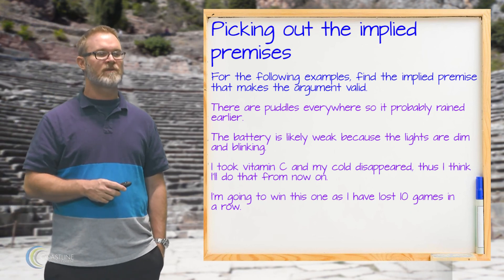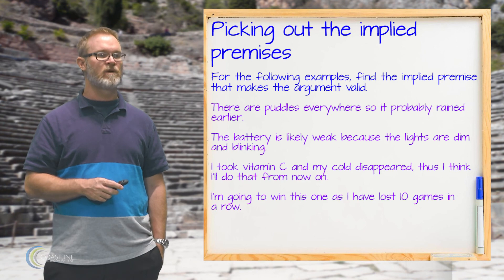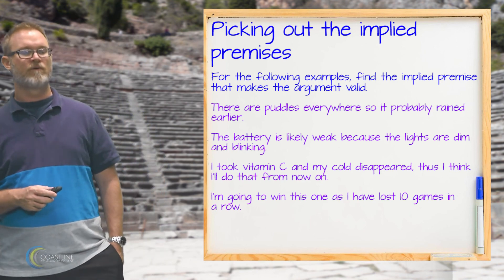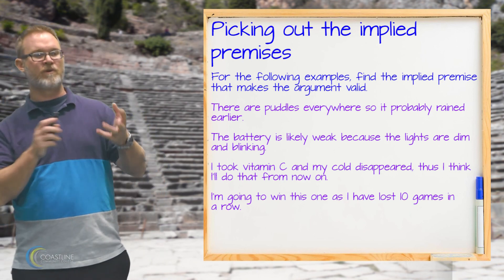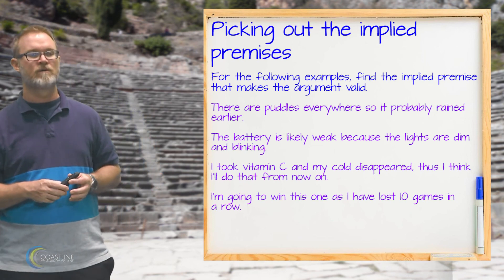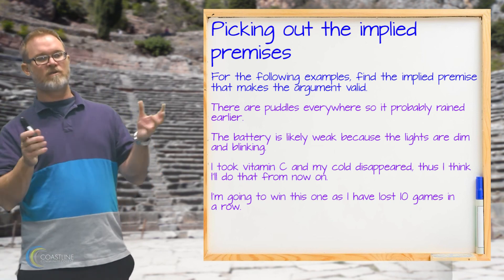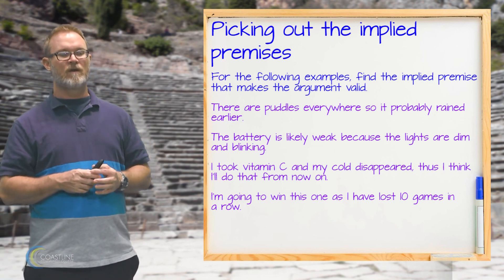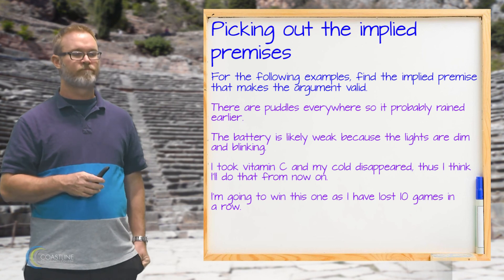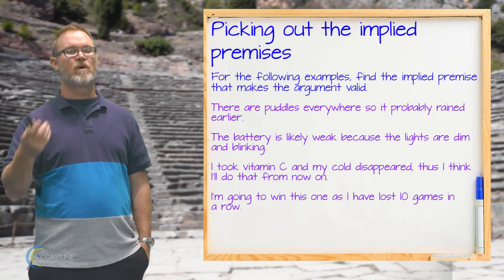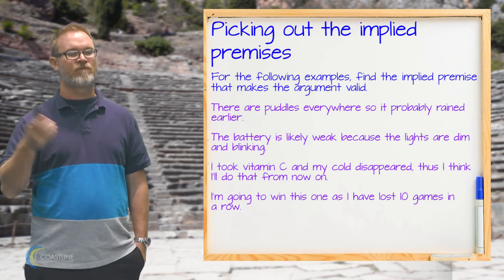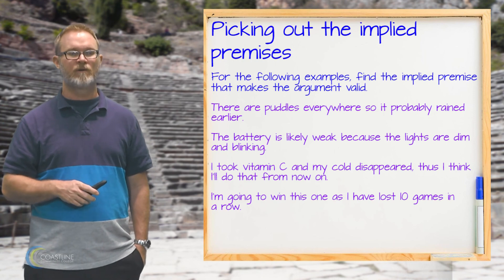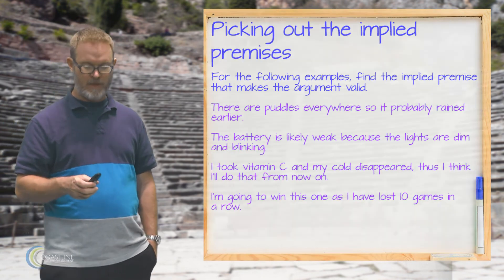Last example: I'm going to win this one as I have lost 10 games in a row. You need an implied premise that makes that conclusion more likely, something like: in most cases, when I've lost 10 in a row, I win the next one.